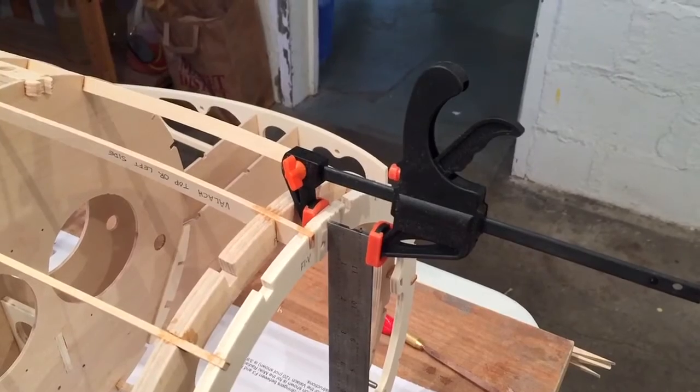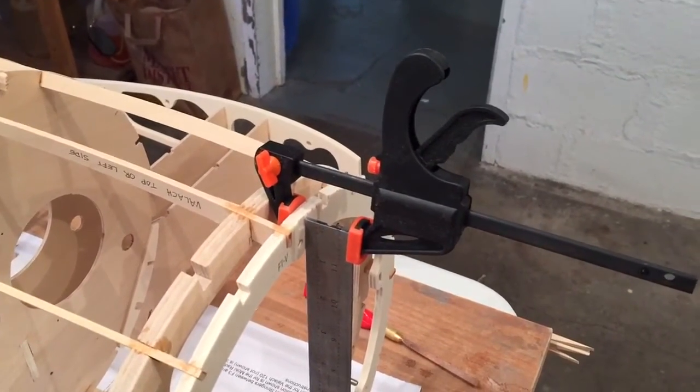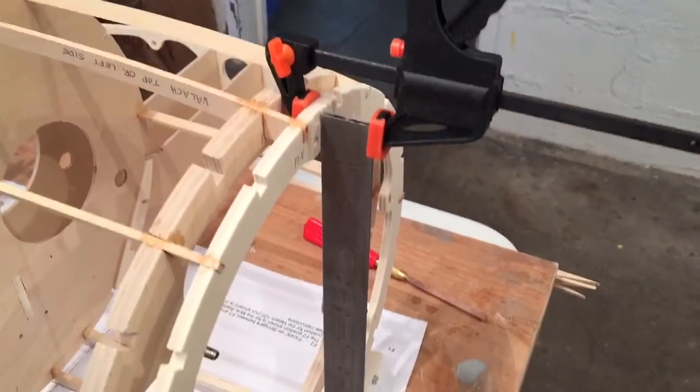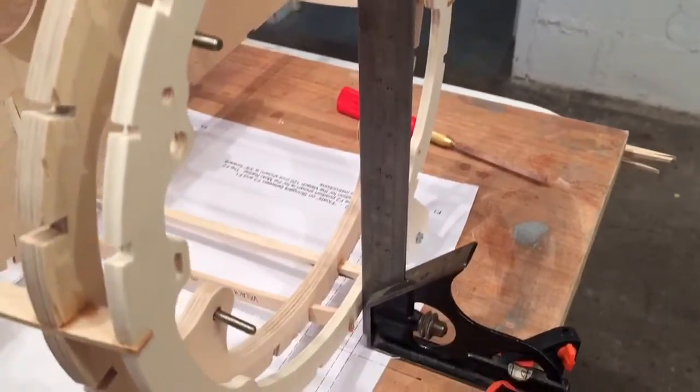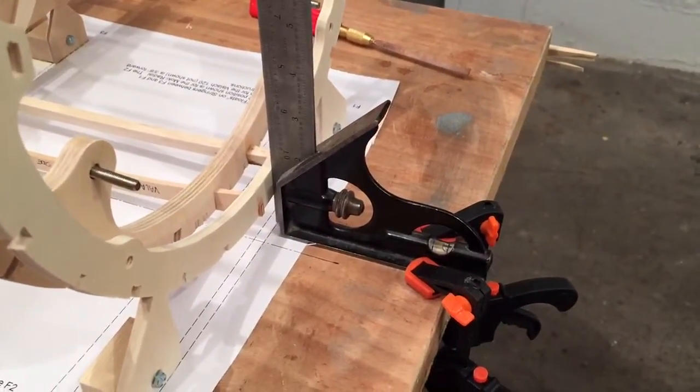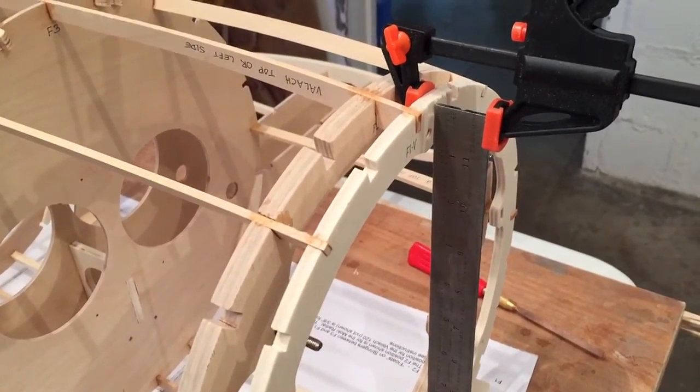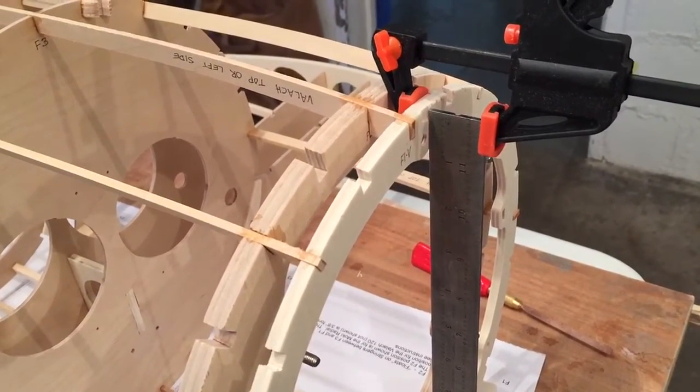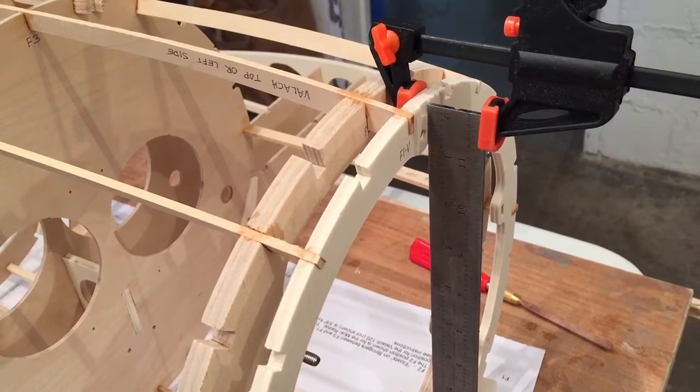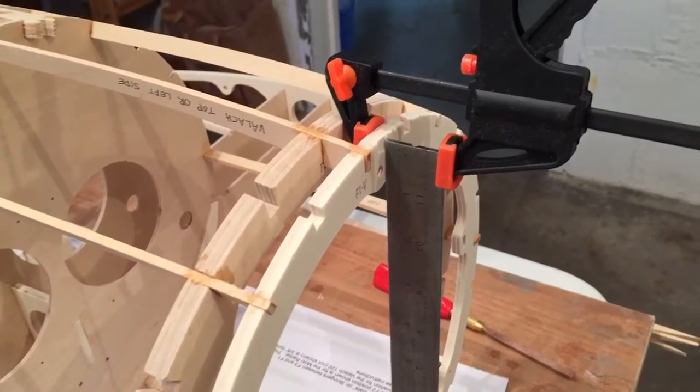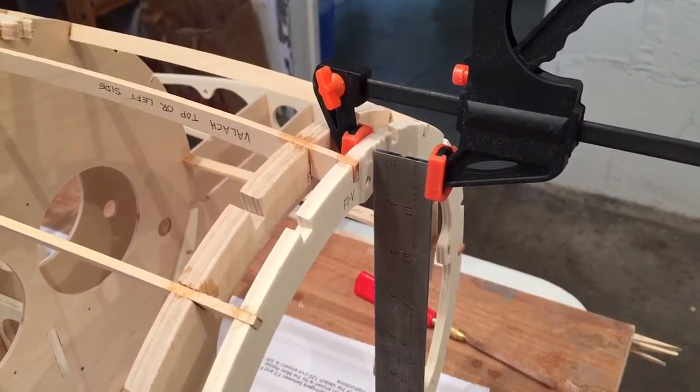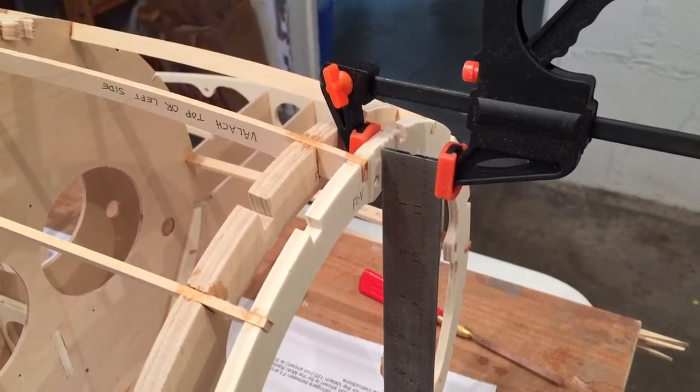First thing you'll notice is I set up a square with some clamps here to make sure that F1 is square forward and backward. It was off a little bit, about a sixteenth of an inch, so I thought I'll square it up, which is what you should do.